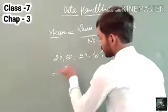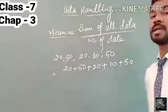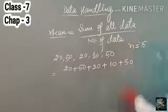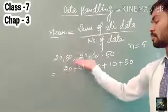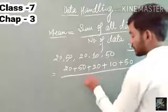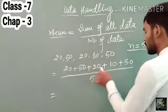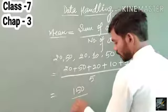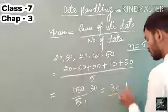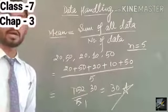So we write 20 plus 50 plus 20 plus 10 plus 15. Now count the data: 1, 2, 3, 4, 5. The number of data, n, is 5. We write the sum of this data divided by the total number of data, which is 5. Finding the sum: 20 plus 50 is 70, 70 plus 20 is 90, plus 10 is 100, plus 15 is 115, divided by 5. Simplifying, the answer is 30.